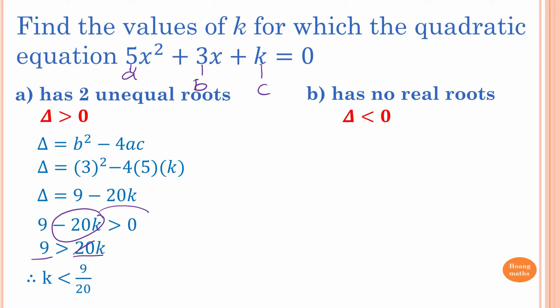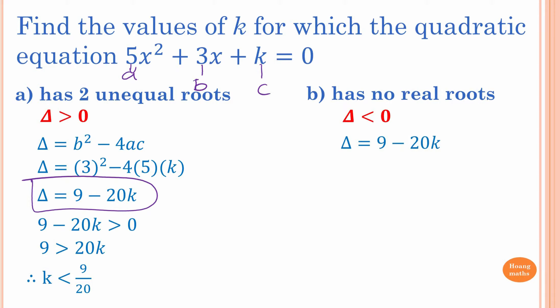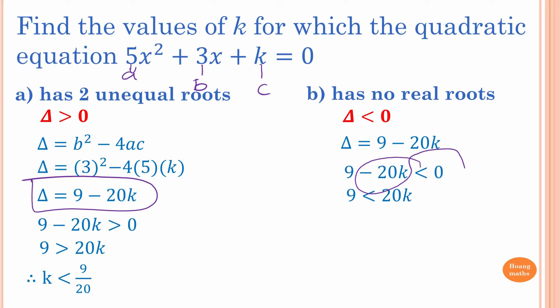We already found the discriminant: it equals 9 minus 20k. We want this to be less than 0. Moving the minus 20k across, 9 is less than 20k, so k is greater than 9 over 20.